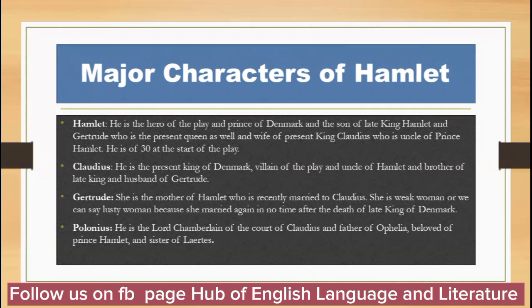Now let's talk about the major characters. When the play starts, Hamlet is studying at Wittenberg University. The next character is Claudius. He is the present king of Denmark, the villain of the play, uncle of Hamlet, brother of the late king, and husband of Gertrude.